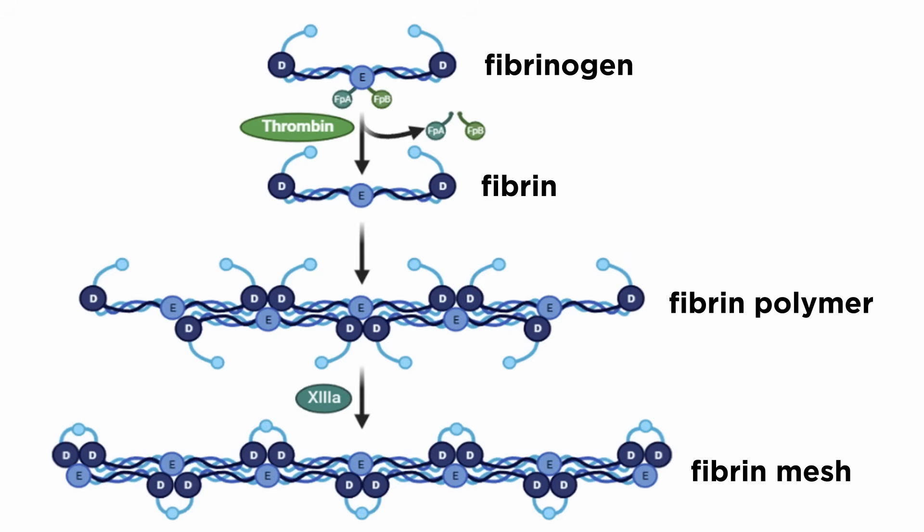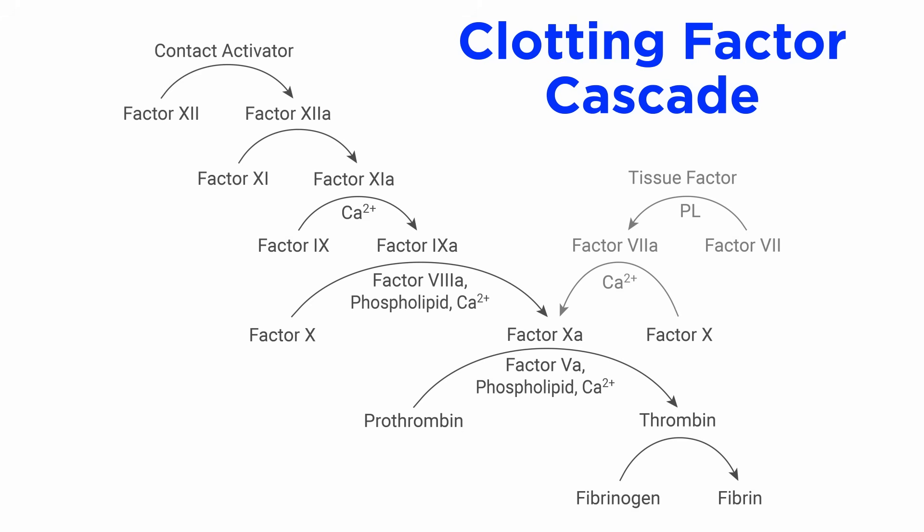We learned in an earlier tutorial that fibrin cross-linking mesh formation stabilizes platelet-platelet interactions in thrombosis. To understand this in greater detail, we need to understand some of the details relating to the clotting factor cascade. This is a complicated signaling cascade that is important to be aware of, but generally not necessary to memorize. The consequences and endpoints of the cascade are the most critical things to grasp, and this is indeed where anticoagulant drugs mediate the majority of their effects.